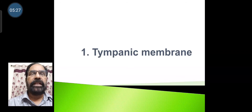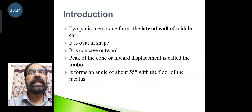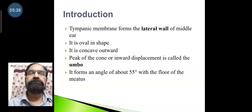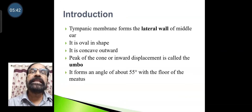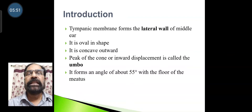The tympanic membrane forms the lateral wall of the middle ear. It is oval in shape and concave outwards. The peak of the cone on the inner side is called the umbo. This tympanic membrane forms an angle of about 55 degrees with the floor of the external acoustic meatus.